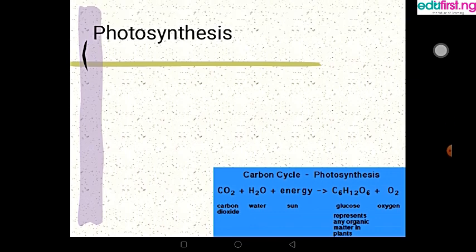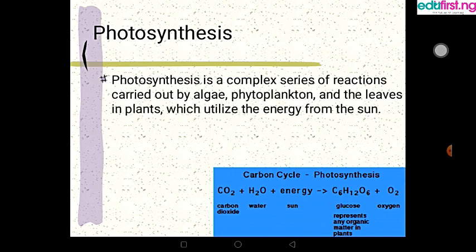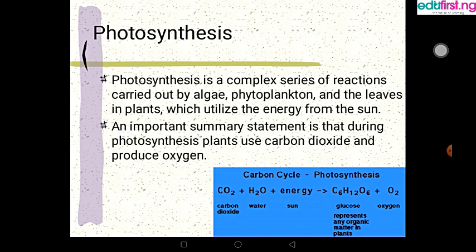Now let's look at the photosynthesis. Photosynthesis is the process whereby green plants make use of light in the presence of water to make their own food. Now look at it like algae, phytoplanktons from leaves and plants utilizes the energy from the sun to form glucose, which is the food, and oxygen. Basically this is photosynthesis and in summary the plants use carbon dioxide produced from the sun and produces oxygen.